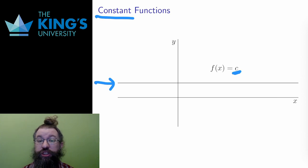To write a constant function, I'll just write f of x equals c, where c is some constant, indicating that the output is c no matter what input x is given. Constant functions have no domain restrictions.